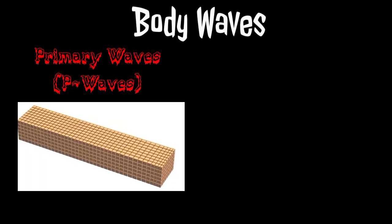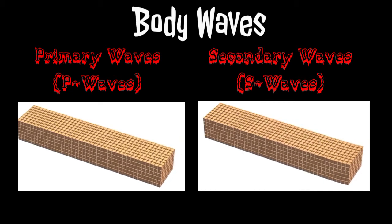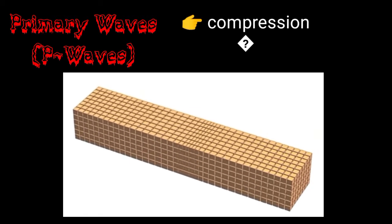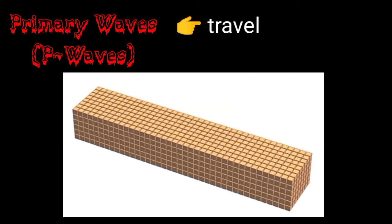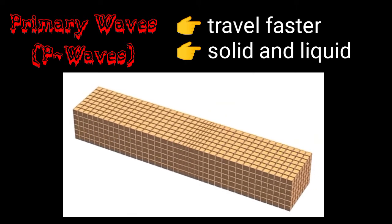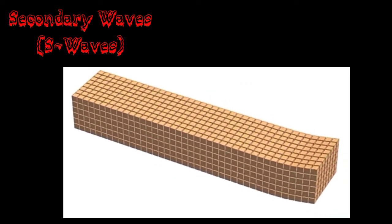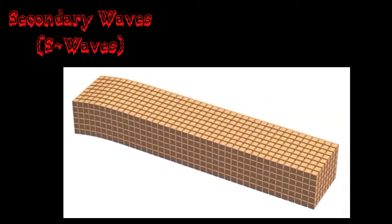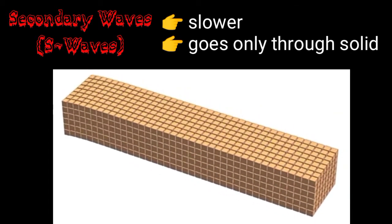Primary waves, or P-waves, and secondary waves, or S-waves, are the two types of body waves. P-waves are like compression and move in a longitudinal direction. They travel faster and reach the destination first, passing through both solids and liquids. Secondary waves, or S-waves, are transverse or in shear motion. S-waves travel slower and pass only through solids, not through liquids.